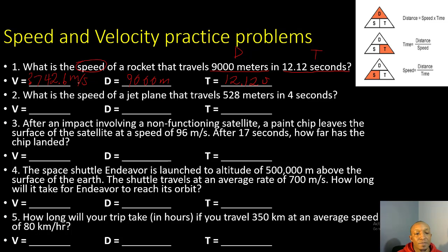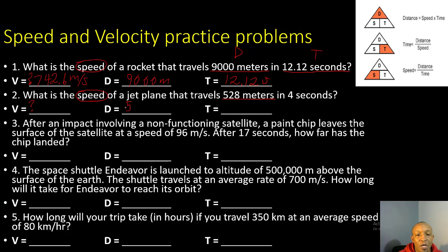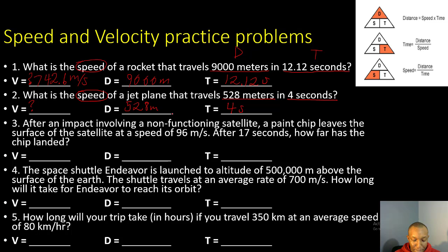Number two: what is the speed of a jet plane that travels 528 meters in 4 seconds? We're solving for speed. Distance is 528 meters, time is 4 seconds. Using speed = distance ÷ time: 528 ÷ 4 gives us 132 meters per second.